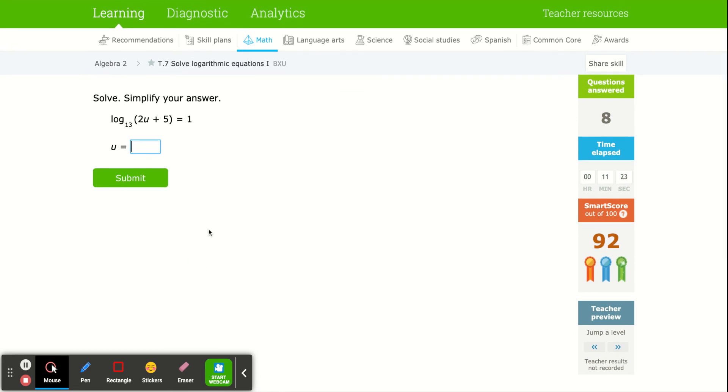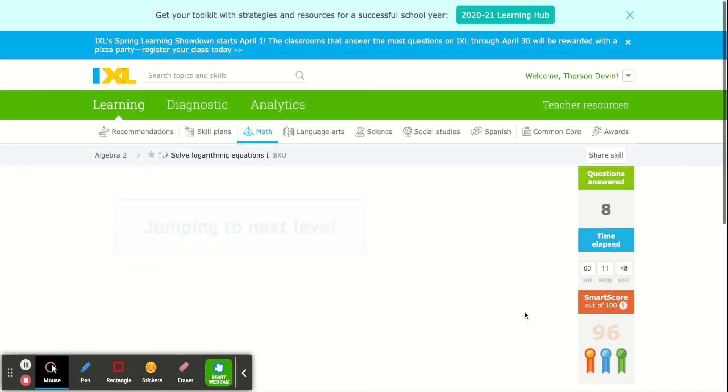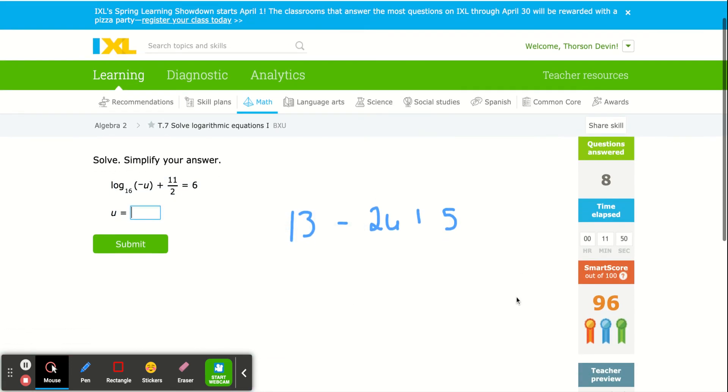Again, the algebra comes afterwards. I'll write 13 raised to the 1 power—13 is the base, 1 is the exponent—equals the argument of the logarithm. That's what's inside the parentheses is called, the argument. I'll let you finish from here: minus 5 over, divide by 2, and you'll get the answer.